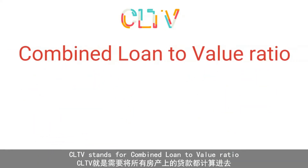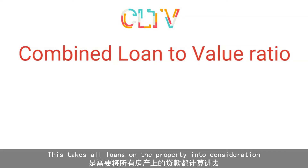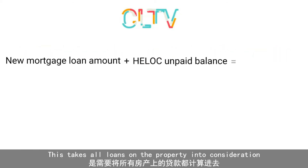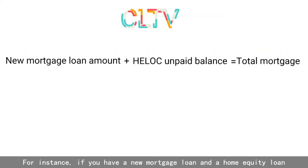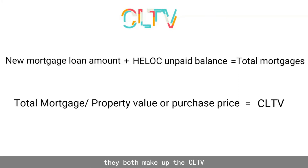CLTV stands for combined loan-to-value ratio. This takes all loans on the property into consideration. For instance, if you have a new mortgage loan and a home equity loan, they both make up the CLTV.